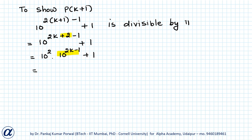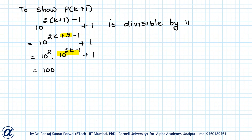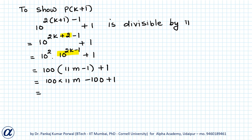Here, 10 to the power 2k minus 1 I can substitute from equation (1) — since 10 to the power 2k minus 1 equals 11M minus 1 — so I get 100 into 11M minus 1 plus 1, which equals 100 into 11M minus 99. Taking 11 as a common factor, I get 11 times (100M minus 9), which is clearly divisible by 11.